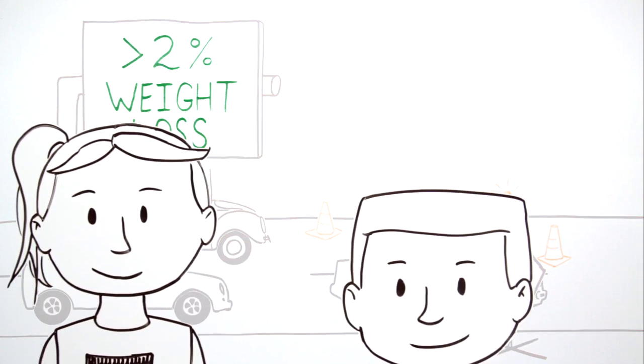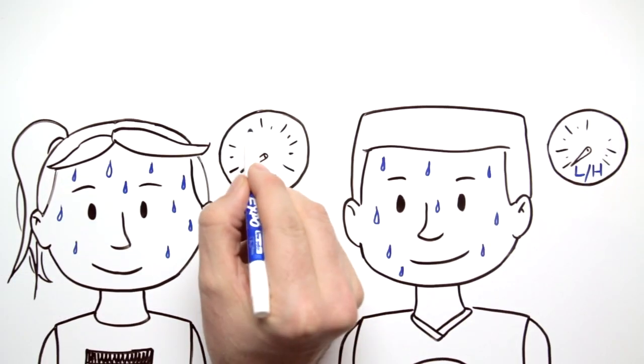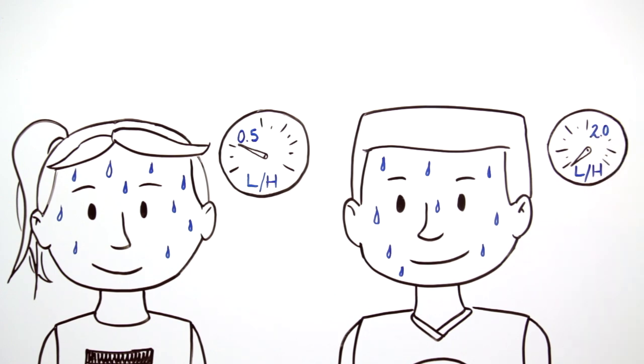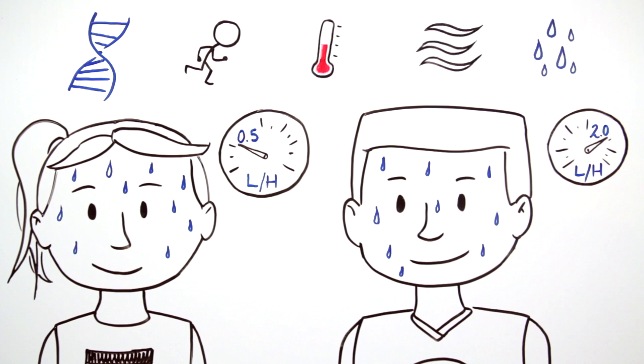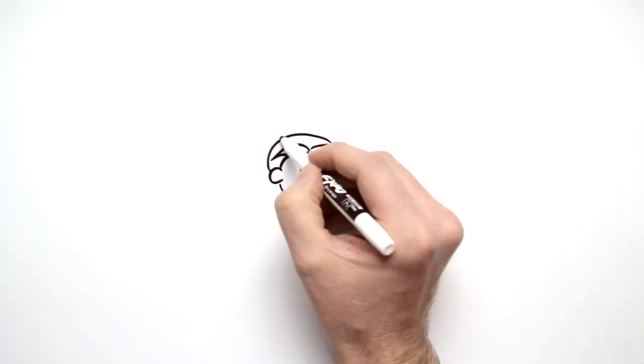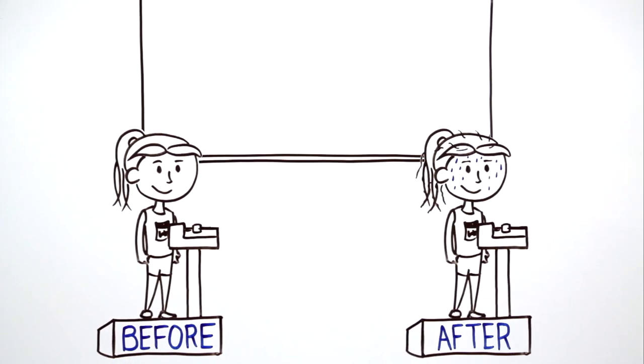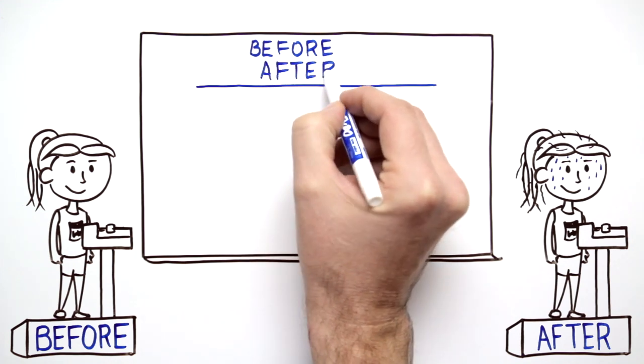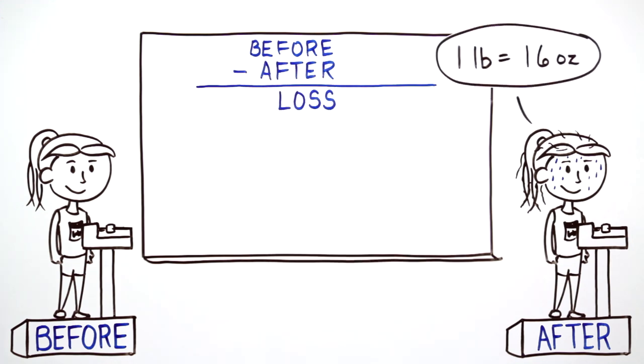The sweating rate of athletes varies widely, typically ranging from between 1.5 to 2 liters of fluid per hour. Factors like genetics and exercise intensity, and environmental conditions like temperature, wind, and humidity can have a big impact on individual sweating rates. Comparing an athlete's weight before and after exercise is the simplest way to estimate fluid loss. One pound is equivalent to about 16 ounces of water.